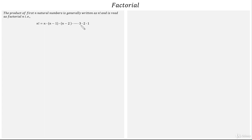Definition of factorial: The product of first n natural numbers is generally written as n factorial. That is, n! equals n into (n-1) into (n-2) till 3 into 2 into 1.